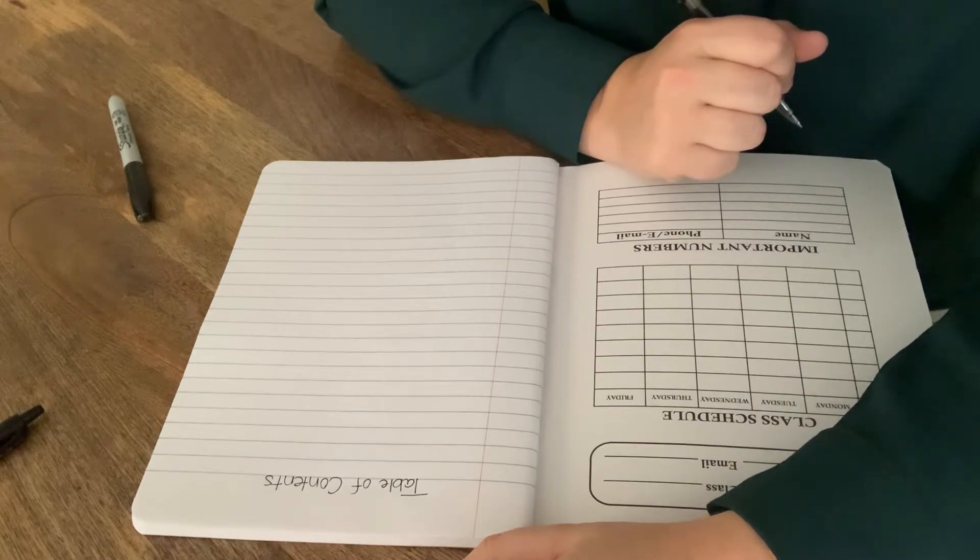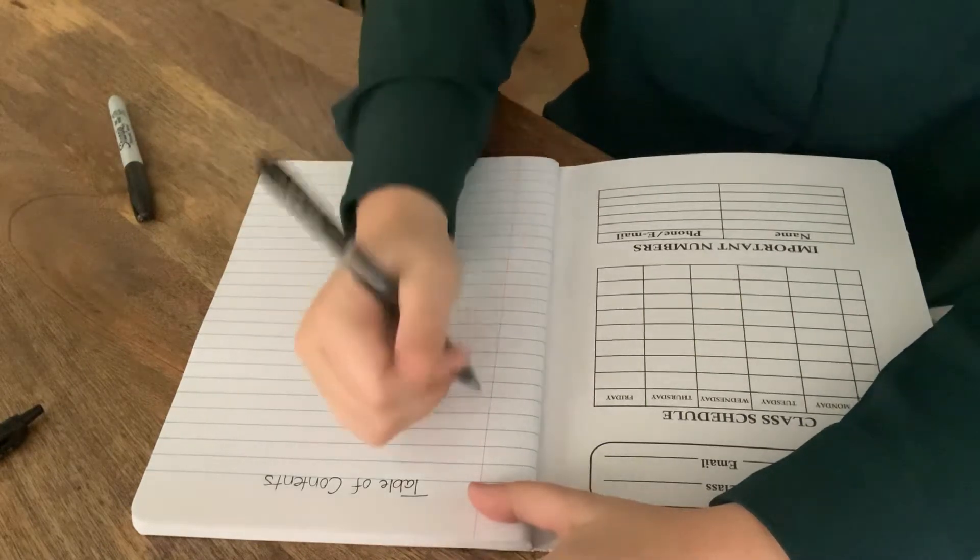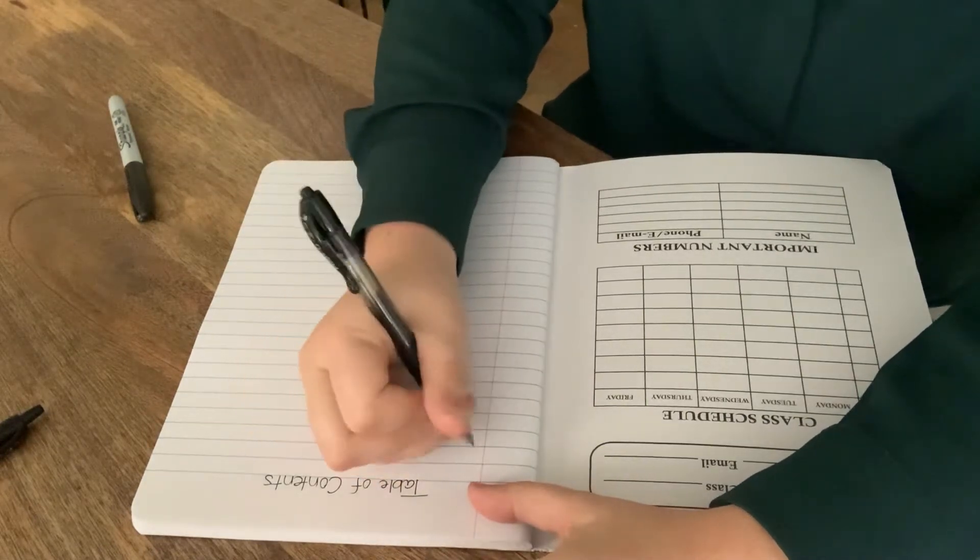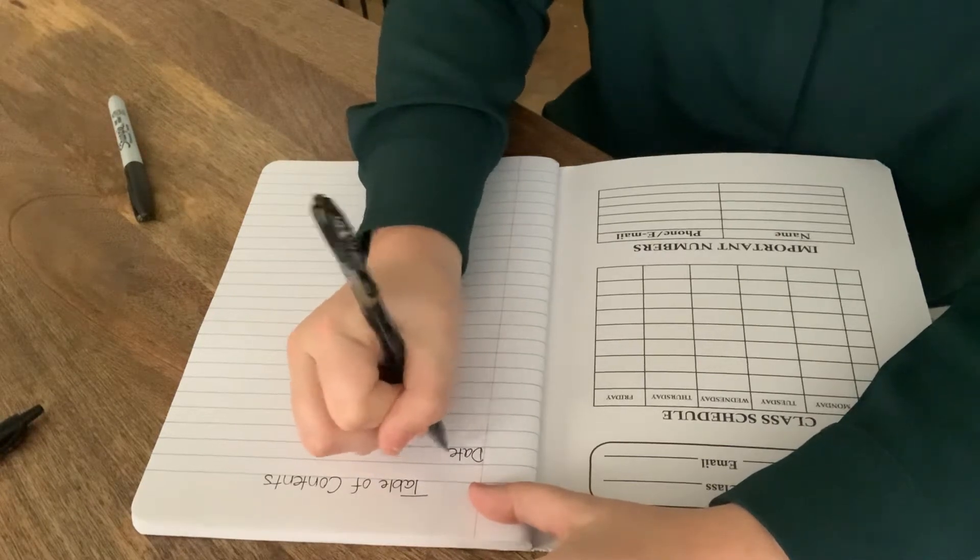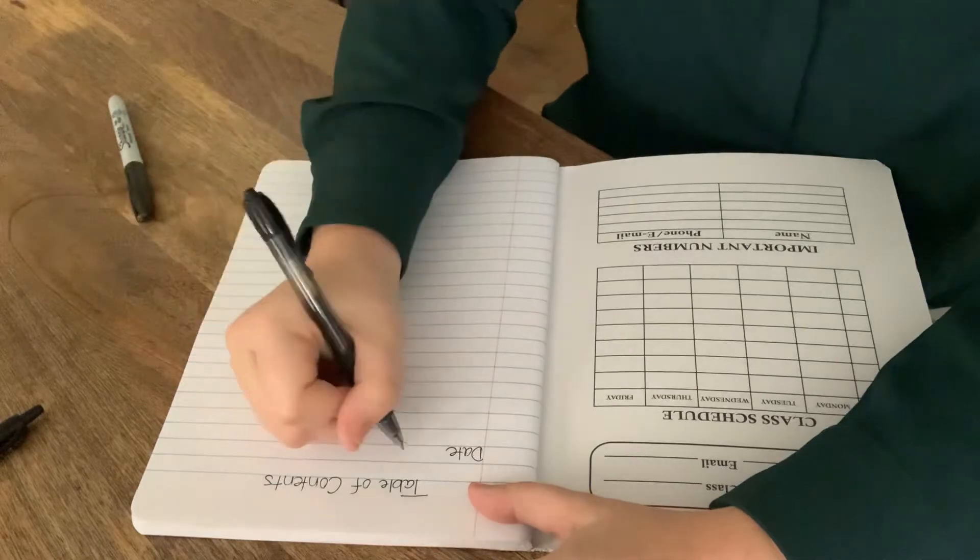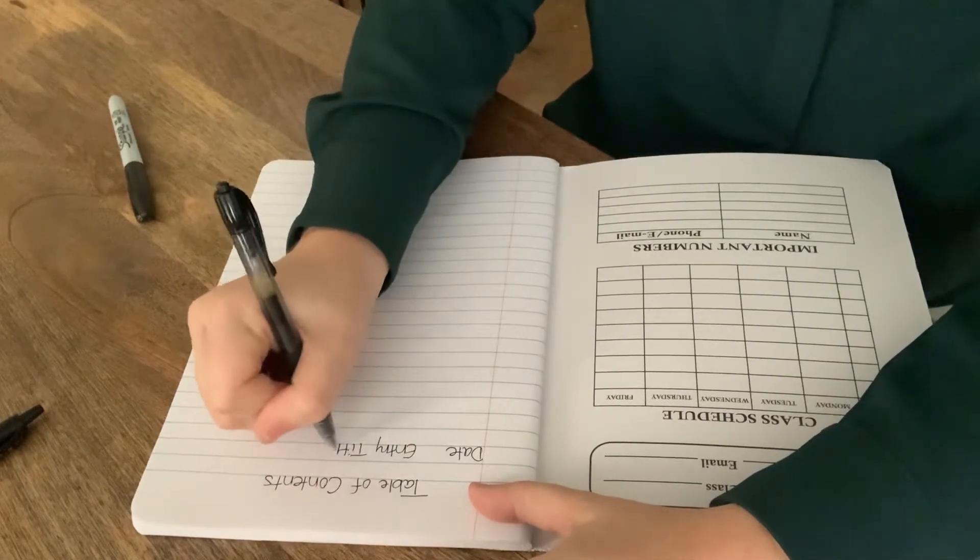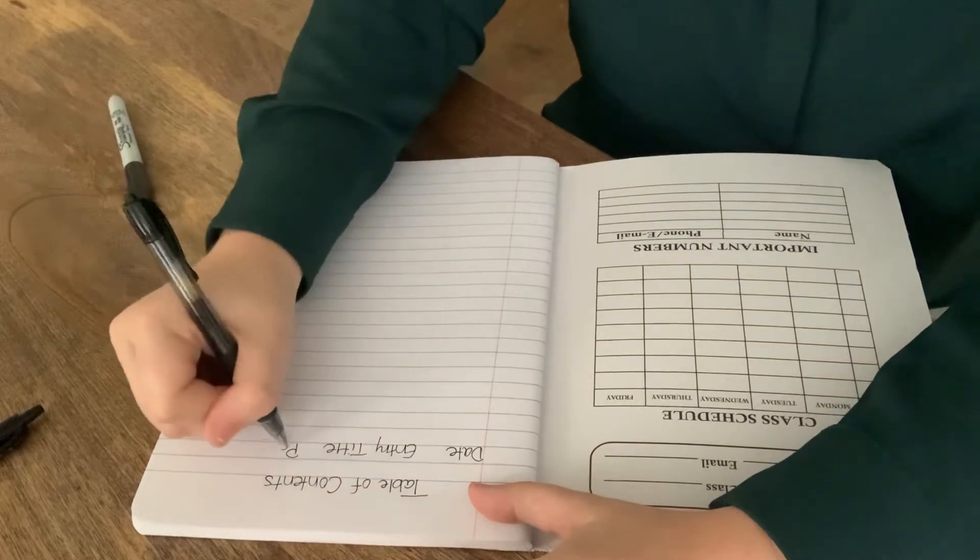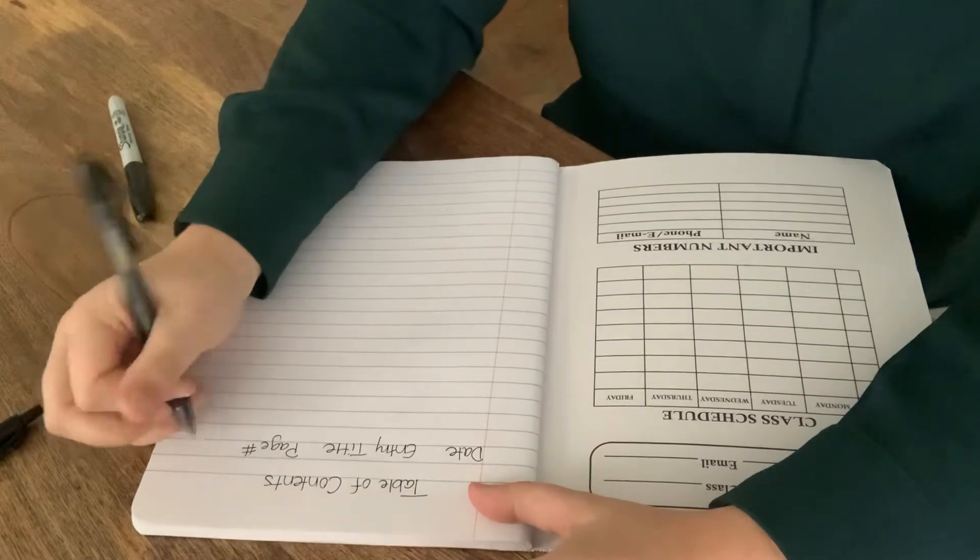Now we're going to organize our table of contents. So on the first line, we're going to put our titles: date, entry title, page number, and symbol.